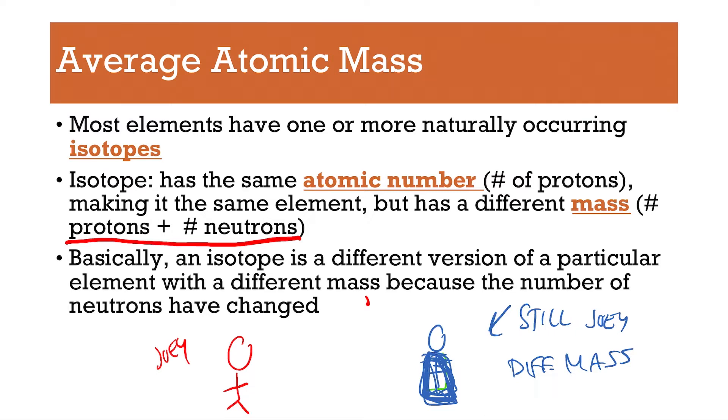So that's what an isotope is, the same element, but a different mass. And how do you get a different mass, but keep the same element? You have to change the number of neutrons. So same element, different number of neutrons, so the mass is different.